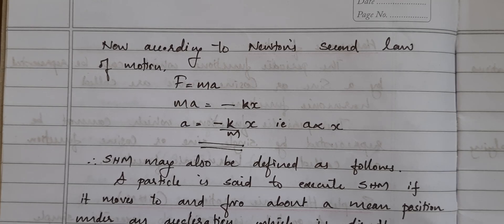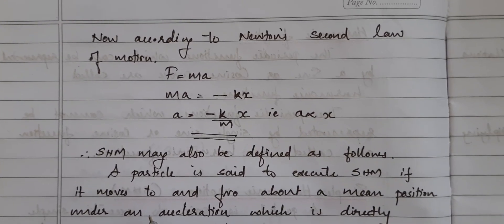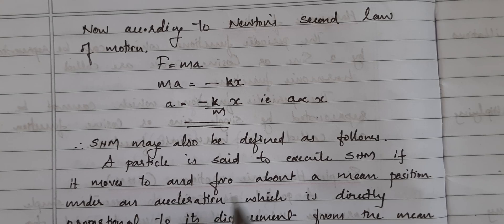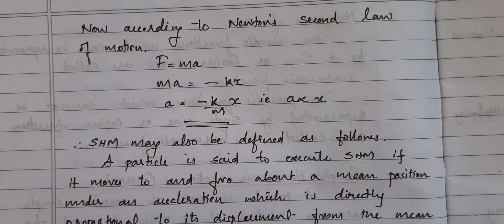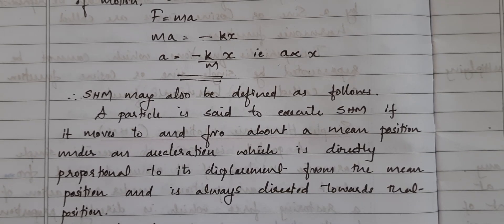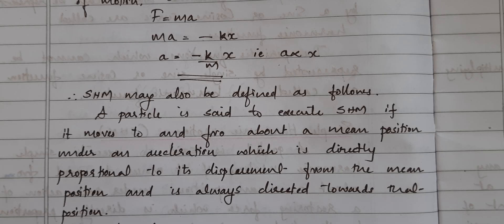So simple harmonic motion can also be defined as: a particle is in SHM if it moves to and fro about a mean position under an acceleration that is directly proportional to the displacement from the mean position and is always directed towards the mean position. Both definitions are correct — either in terms of restoring force or in terms of acceleration.